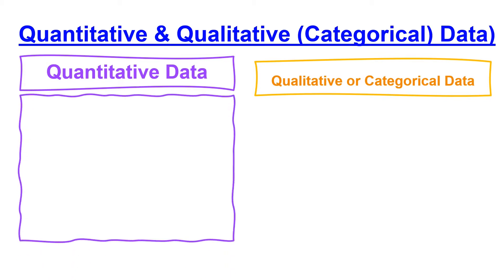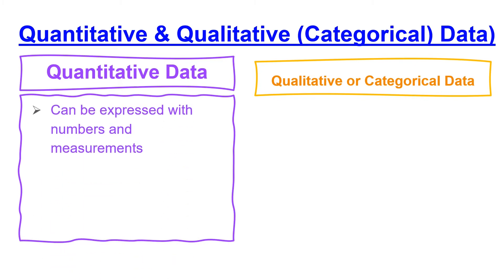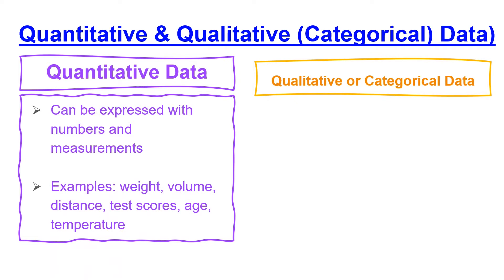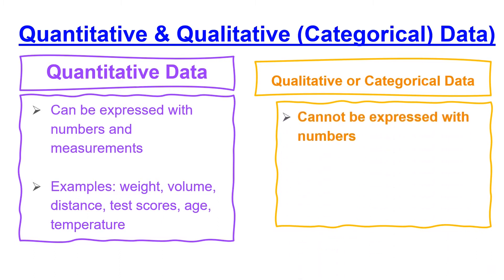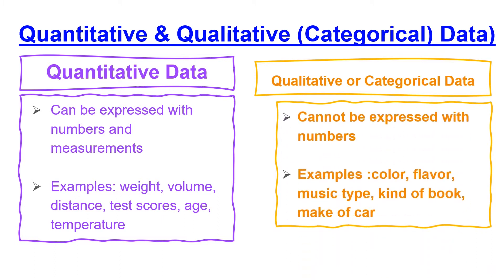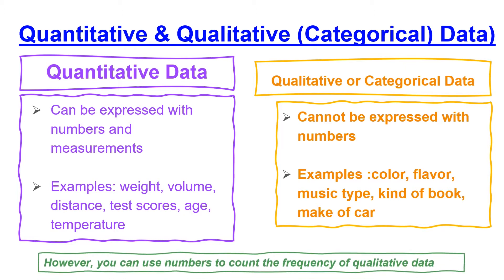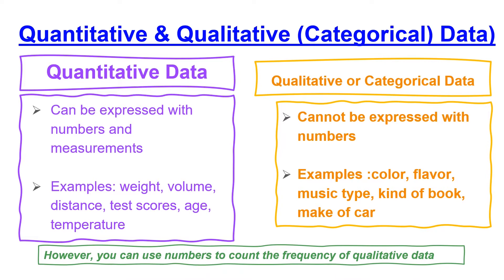Quantitative data — think about the word 'quantity' — is expressed with numbers and measurements. Some examples are weight, volume, distance, test scores, age, and temperature. Qualitative or categorical data cannot be expressed with numbers. Examples include colors, flavor, music type, type of book, and make of a car.